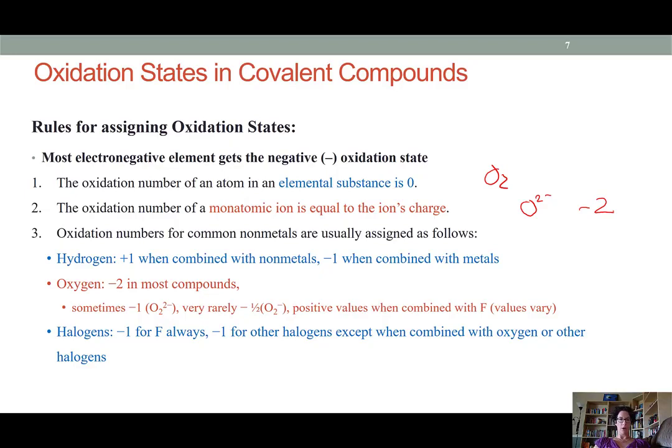Most oxygen ions have a 2 minus charge. So most oxygen atoms in compounds have a negative 2 oxidation state. However, we will see this change in some compounds such as peroxides, where each oxygen has an oxidation state of negative 1, and superoxides, where the O2 minus ion gives a half negative charge to each of the oxygen atoms.